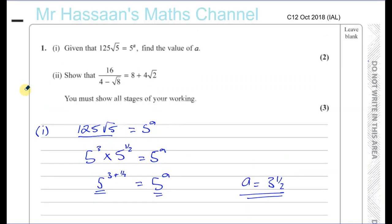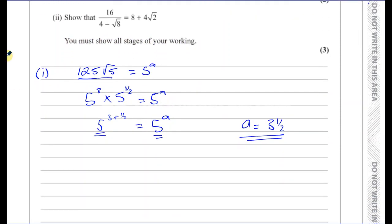Now for part two, we are to show that 16 over four minus root eight equals eight plus four root two. You must show all stages of your working. So in this type of question, especially where they have given us the answer, you have to be really careful to show your steps properly so that the examiner can see exactly how you have done the work.